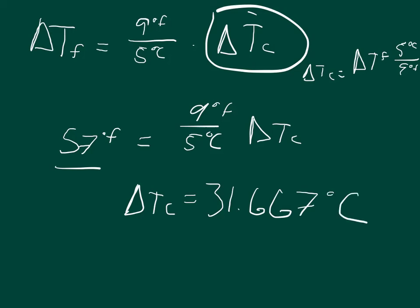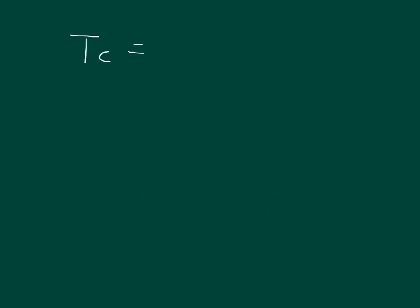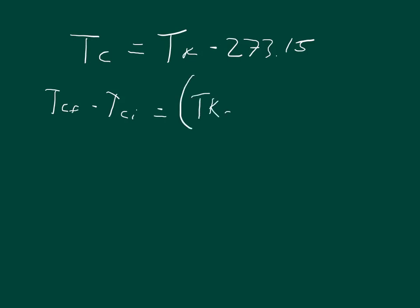Now for Part B, we basically have to do what we just did to derive what the change formula is. We know that the temperature in Celsius equals the temperature in Kelvin minus 273.15. You're probably getting an intuition that the change in temperatures are going to be exactly the same — but let me show you why. If we say the temperature in Celsius final minus the temperature in Celsius initial, that equals the temperature in Kelvin final minus 273.15, minus the temperature in Kelvin initial minus 273.15.